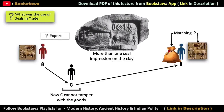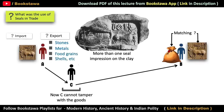Since we are talking about trade, it is also important to know what the people of the Indus Valley Civilization used to export. They used to export precious stones, metals, food grains and shells, and used to import silver and gold. These delivery boys also used boats or bullock carts.